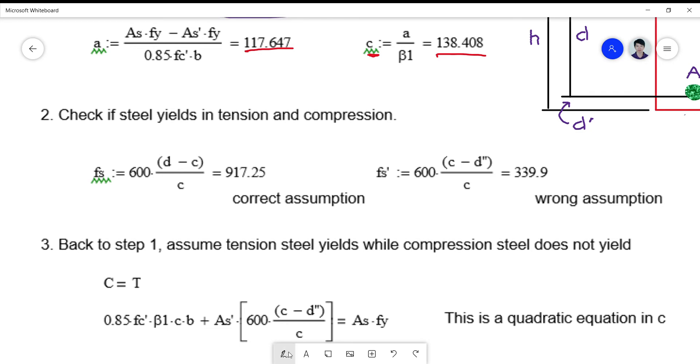The next step is to check if the steel yields in tension and in compression. The formula for tension is 600(D-C)/C and the formula for compression is 600(C-D')/C. Take note of the position of C - it's at the second, it's a negative C here, it's a positive C and a negative D double prime there. Let's check the assumption now: is this greater than FY? Yes, so the assumption is correct. Is this greater than FY? FY is 400 - I didn't change it. This is not greater.